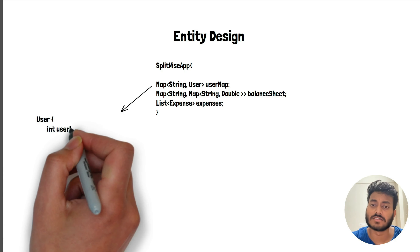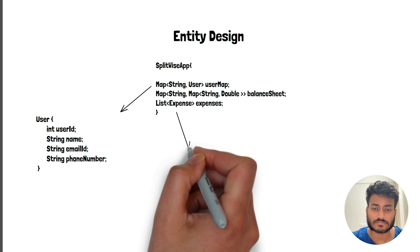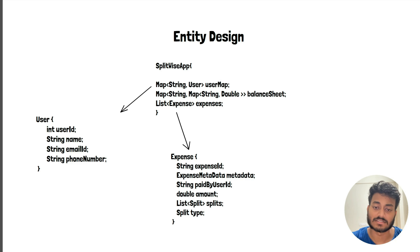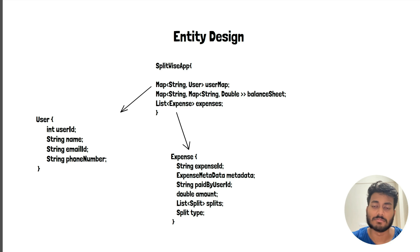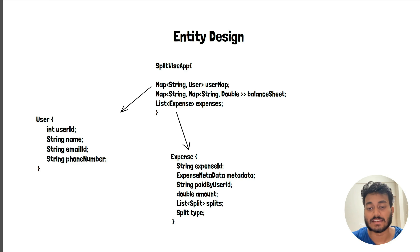The user class will have a user ID, a user name, email ID, and phone number. Next is the expense entity — a transaction added on the application. It will have an expense ID and expense metadata, which will contain information related to that expense like a picture, name, or URL to remind others — for example, that you paid at dinner — along with the user ID of who paid and the amount paid.